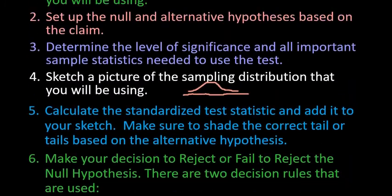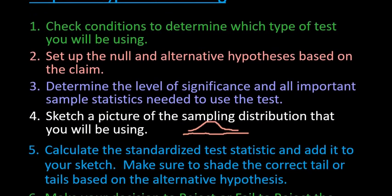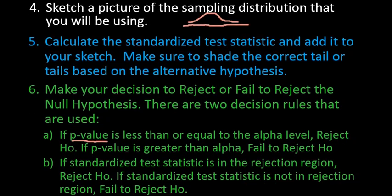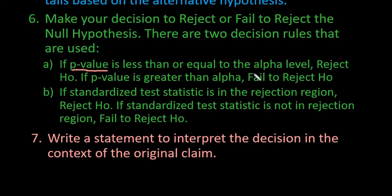A hypothesis test is used to determine whether a claim is true or not. It's based on sample statistics, and all hypothesis tests generally follow the same method: checking your conditions, setting up your null and your alternative, determining your level of significance, sketching a model, calculating your standardized test statistic, and then making your decision to either reject or fail to reject the null hypothesis. You always interpret your decision in the context of the original claim. Thanks for watching — if you have any questions or additional topics you need me to cover, please let me know. We'll see you next time.